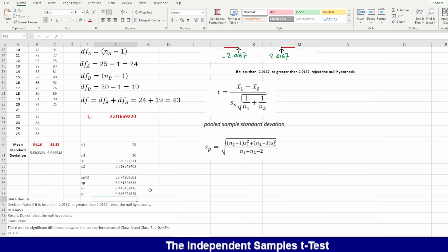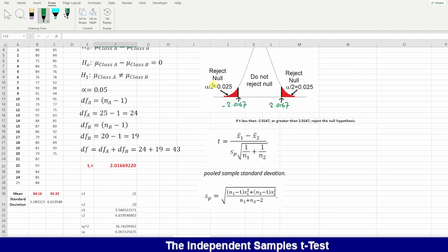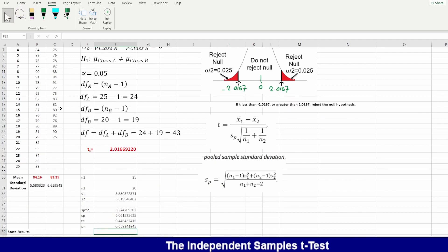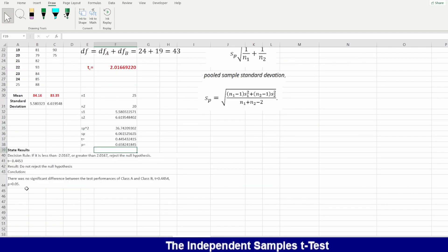Now let's find the conclusion. This is the zero here. Our t I found it here equals to 0.445, somewhere here. Meaning I will not reject the null hypothesis. Result: do not reject the null hypothesis. Conclusion: there was no significant difference between the test performance of class A and class B.